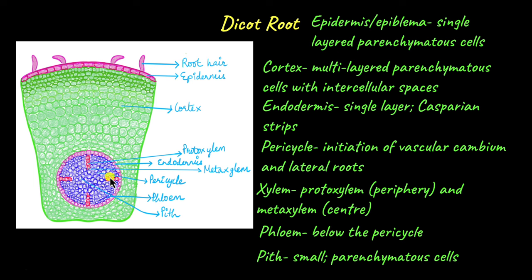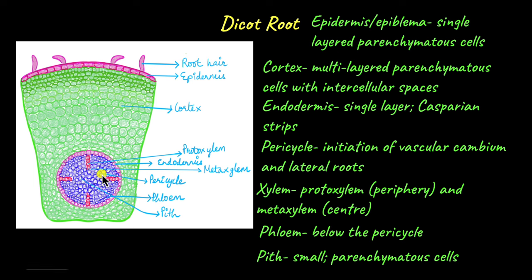In dicot roots, the pith is located in the center but it is quite small and underdeveloped. It is made up of parenchymatous cells and functions to store nutrients. All of the cells below the endodermis — the pith, the pericycle, and the vascular bundles — are collectively called the stele.